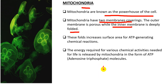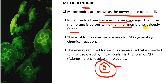Mitochondria have two membranes — one inner and one outer. The outer membrane is porous, meaning material can go in and out. The inner membrane is deeply folded, which increases the surface area so that ATP-generating chemical reactions can occur more easily.